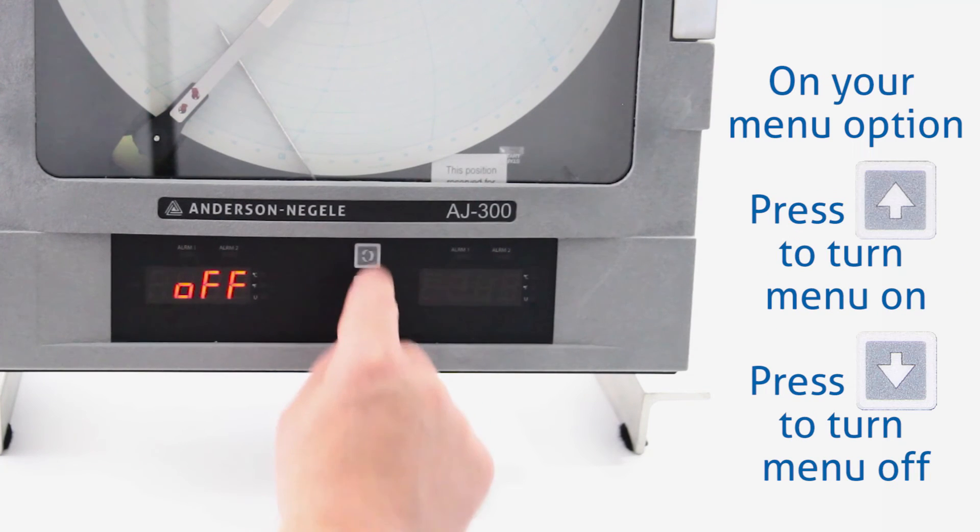When you want to turn a menu on, if you see the word off, you hit the up arrow key. That will turn it on. The down arrow key will turn it off. I'm going to turn all of the menus on.